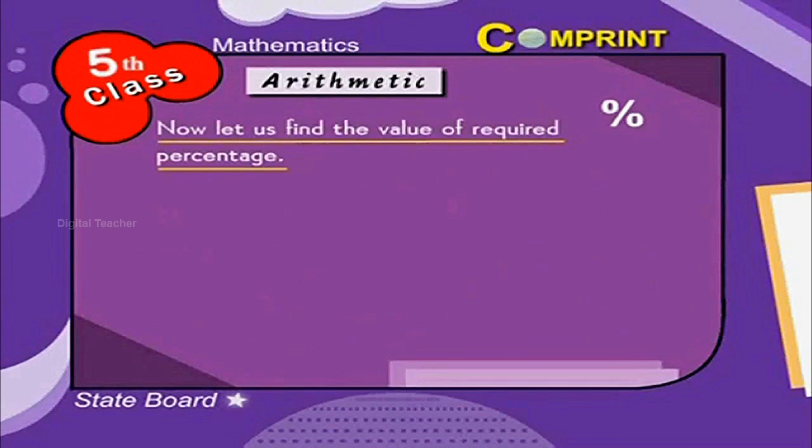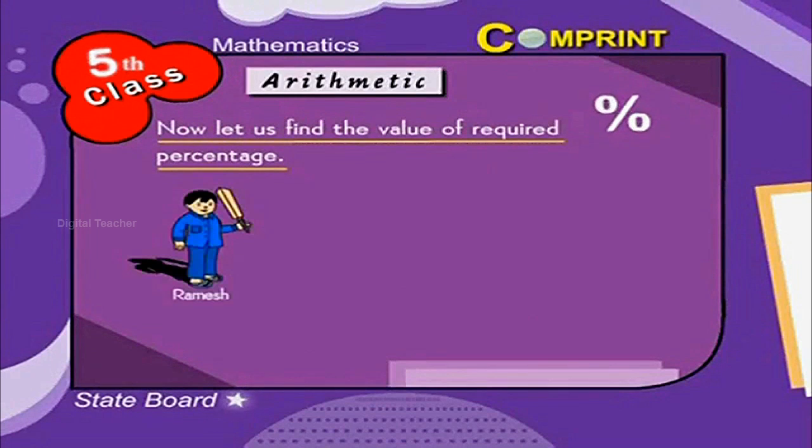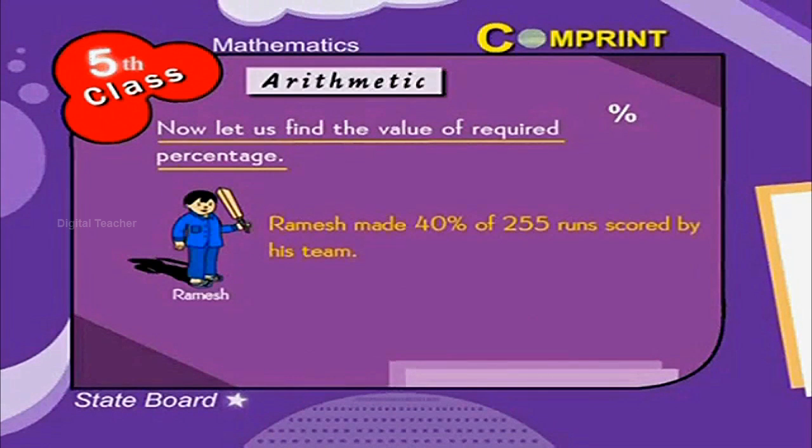Now let us find the value of required percentage. For example, in a cricket match, Ramesh made 40% of 255 runs scored by his team. How many runs did Ramesh score?